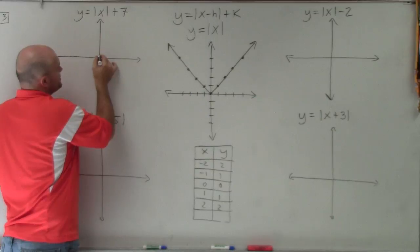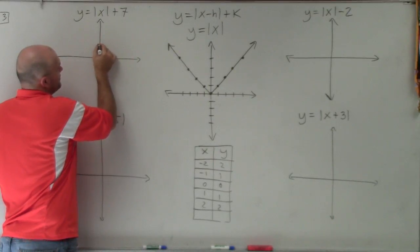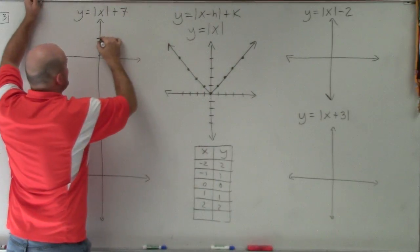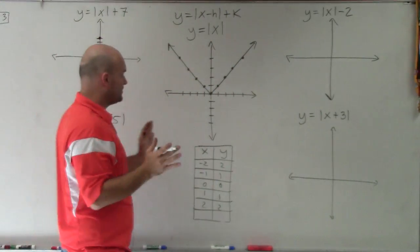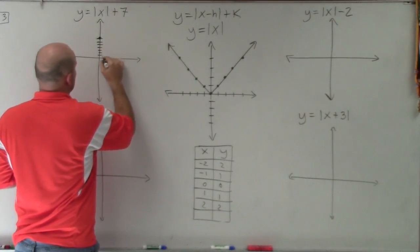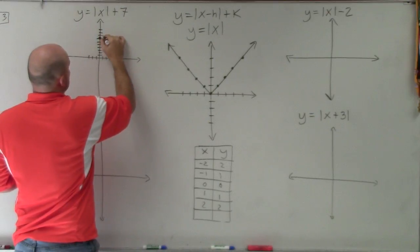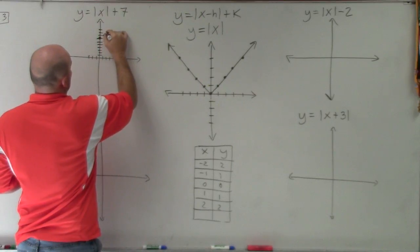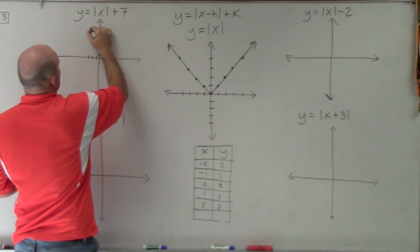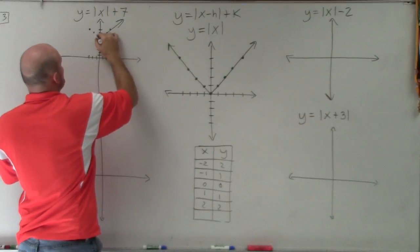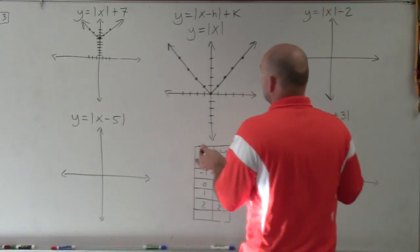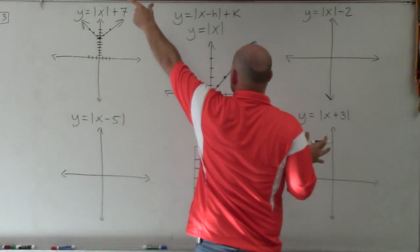To graph this, I'm going to go 1, 2, 3, 4, 5, 6, 7 — I'm basically going to take this graph and shift it all seven units up. The shape of the graph is still going to be over 1, up 1, over 1, up 1. So I just go over 1, up 1 repeatedly in both directions from the new vertex. The shape of the graph does not change when we have a vertical or horizontal transformation — all we're doing is taking this graph and shifting it seven units up.